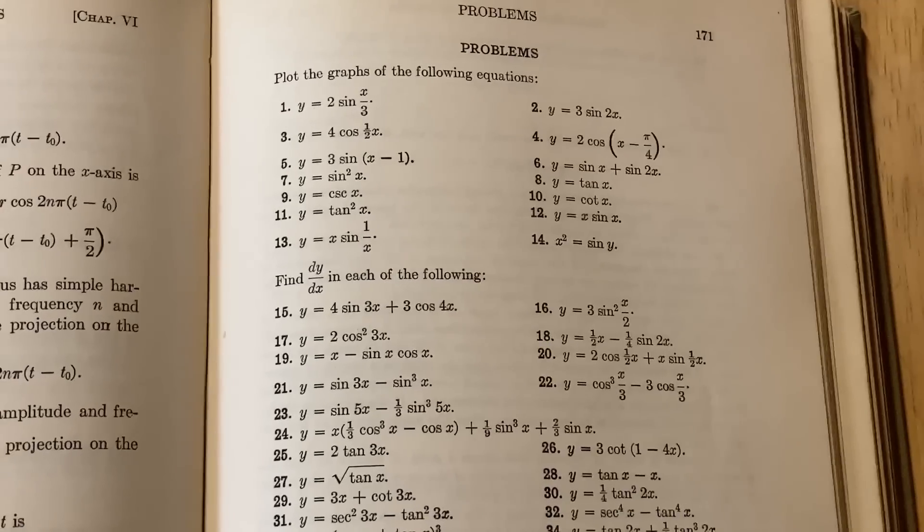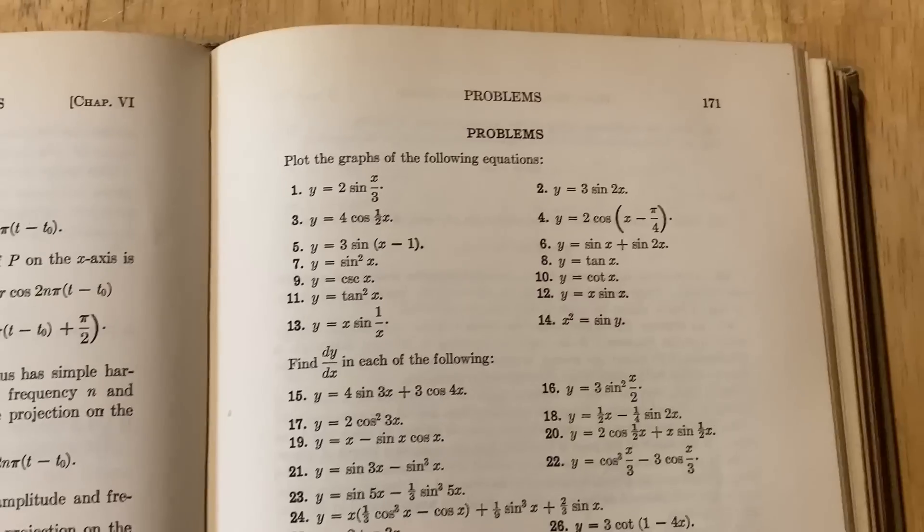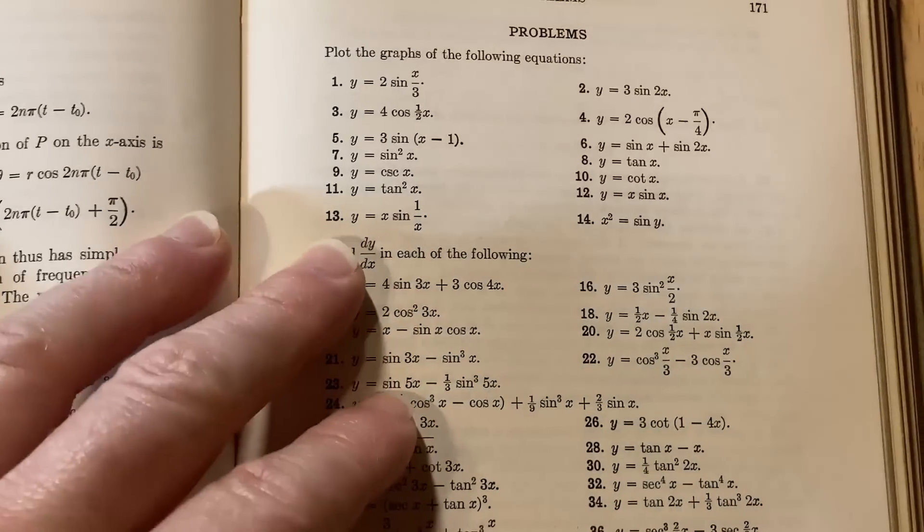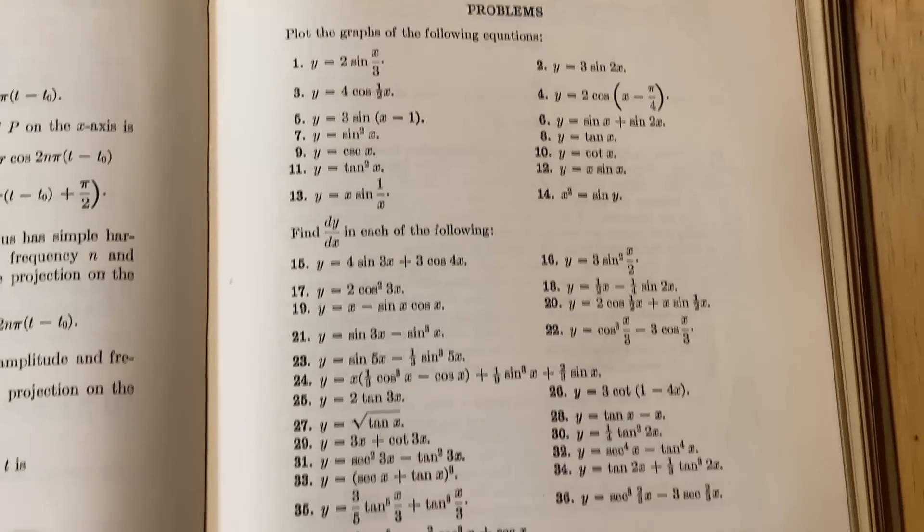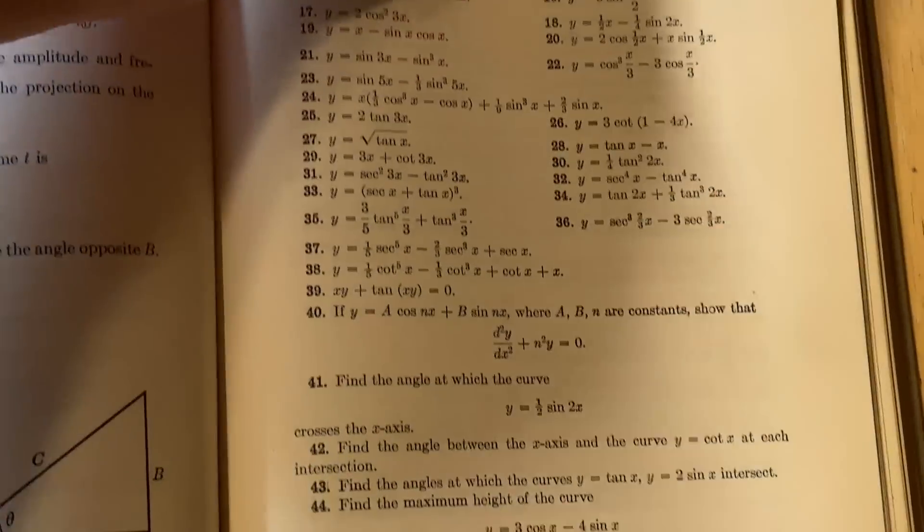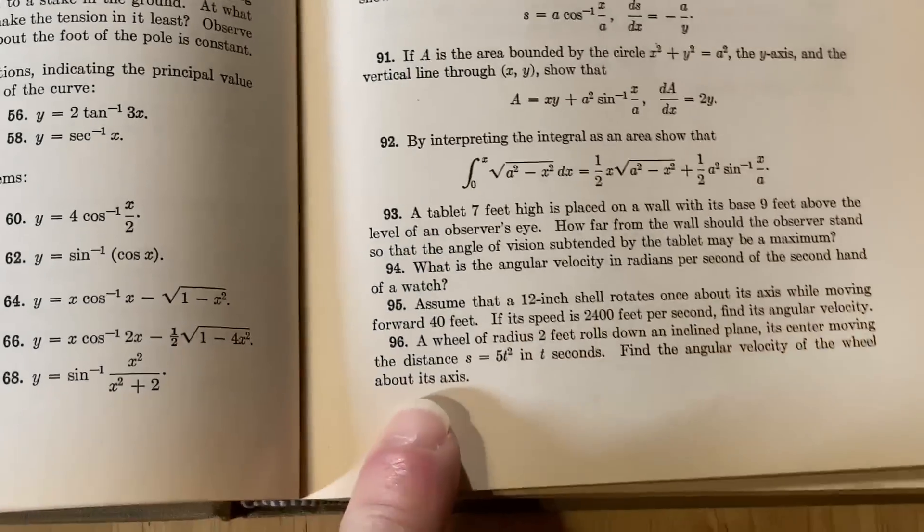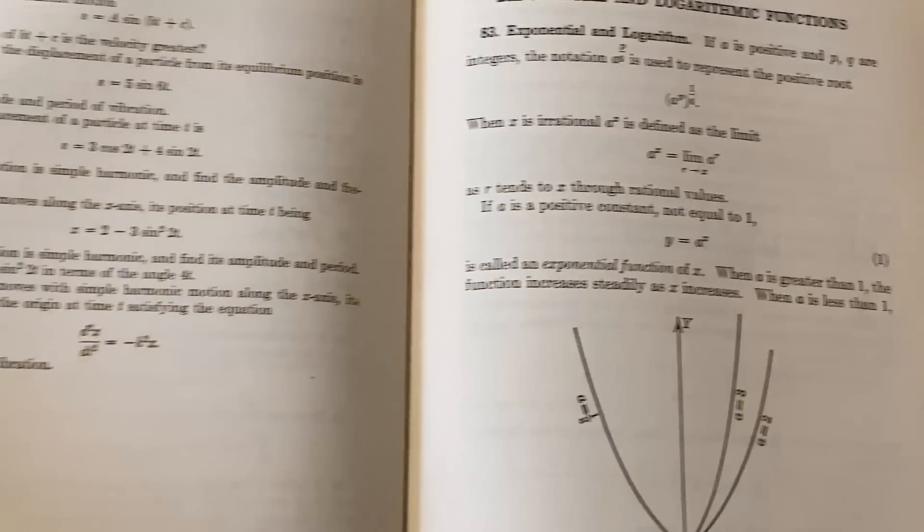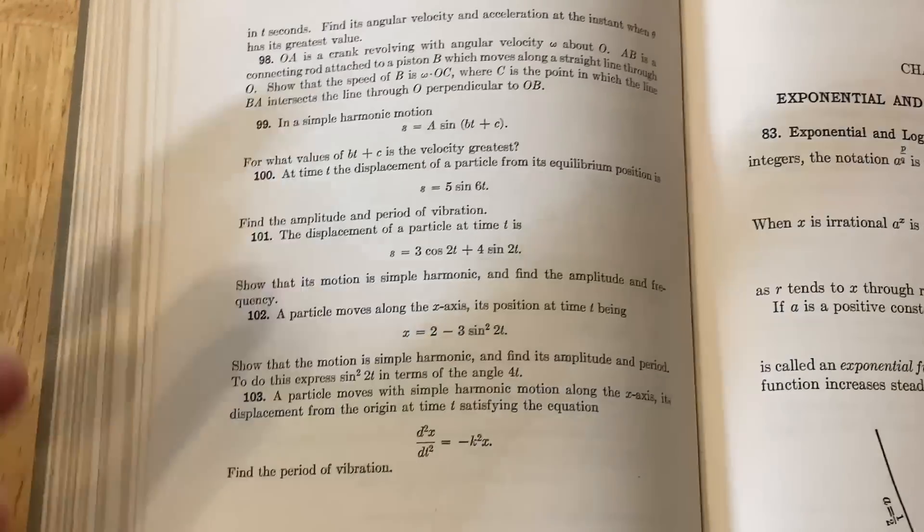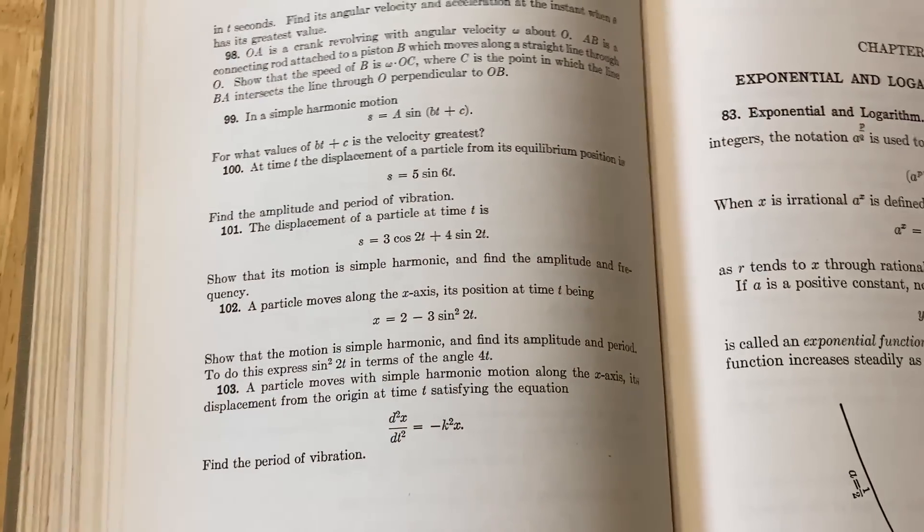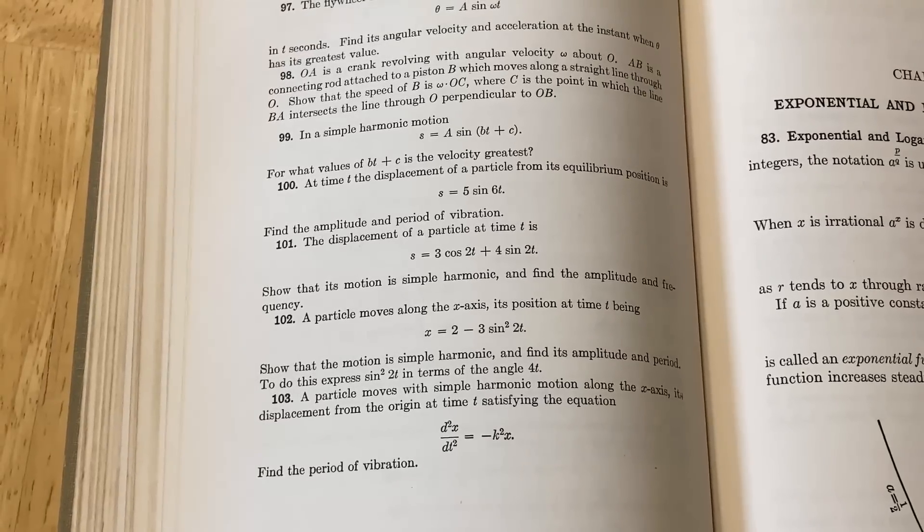The book has a ridiculous number of exercises. Here are some of the problems for the section on trig functions. Look at all of these exercises. You have to graph these equations. Wow, 68. It keeps going. 96. Tons of problems. This book must have been like groundbreaking when it came out, because it just has so many problems, and you have answers to pretty much every single exercise. Perfect for self-study.